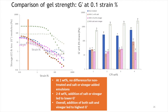To directly compare gel strength, G' at 0.1% strain within the linear viscoelastic region was reported. For non-treated emulsions, G' increased from 1% to 2% canola protein isolate (CPI), remained unchanged at 3% CPI, then further increased at 4% CPI. With either salt or vinegar addition, G' did not change significantly at 1% protein but dropped significantly at all higher concentrations. When both salt and vinegar were added, a significant increase in G' was observed for all emulsions.